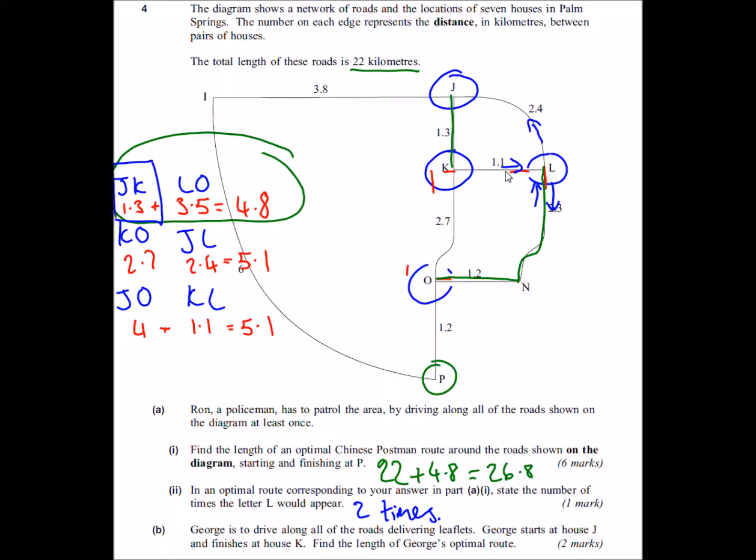So these ones are allowed to be odd. We only have to pair up L and O. So because we're pairing up L and O, we're going to do our 22 from the start and we're going to add on the 3.5 for L and O and that gives us a total of 25.5.